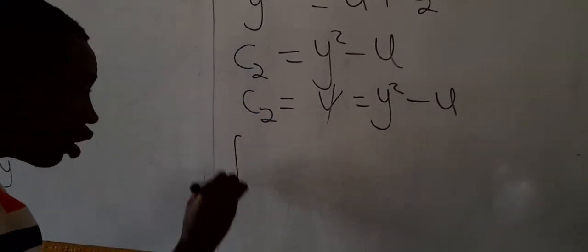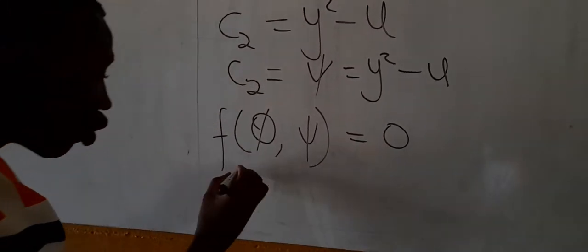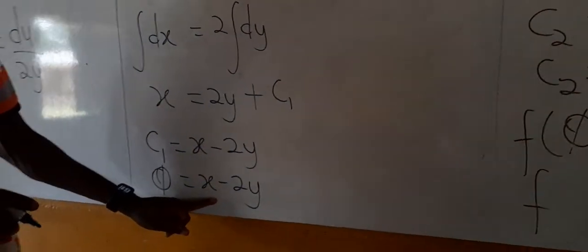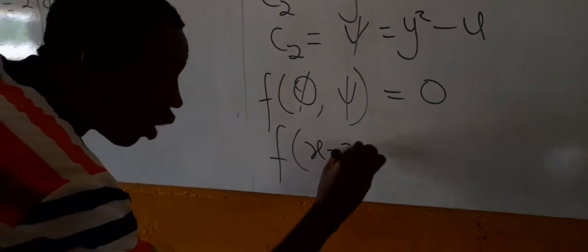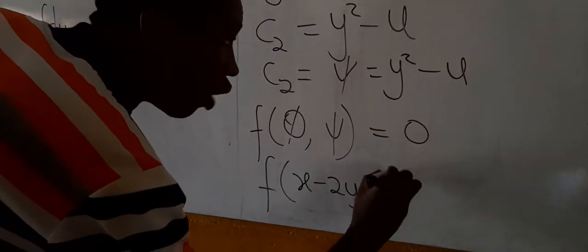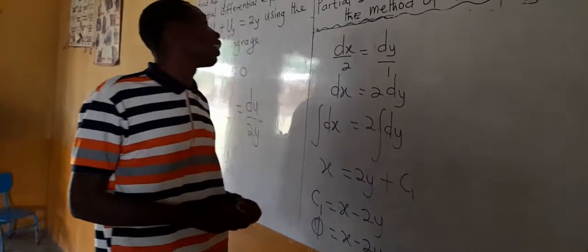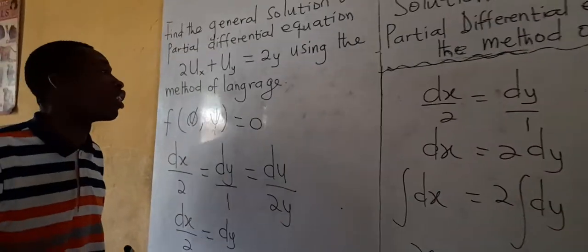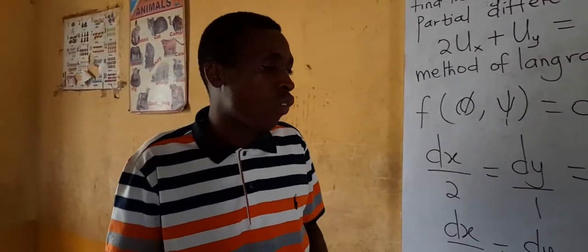So our general solution, which is φ(π, φ) = 0, is: φ(x − 2y, y² − u) = 0. This is the general solution to this partial differential equation using the method of Lagrange.